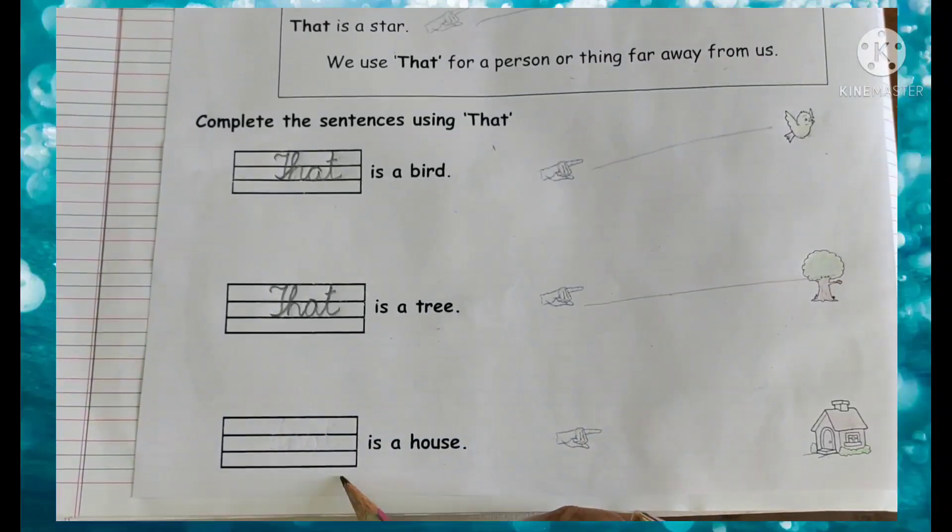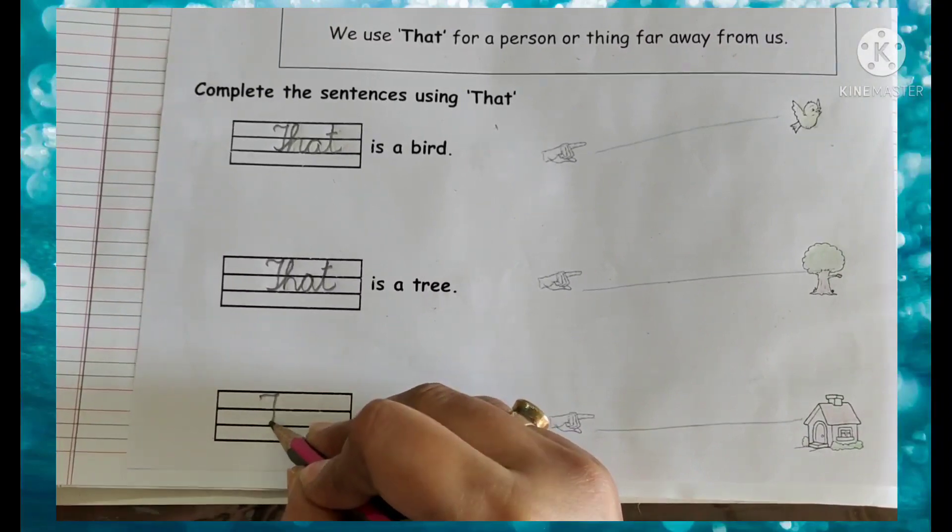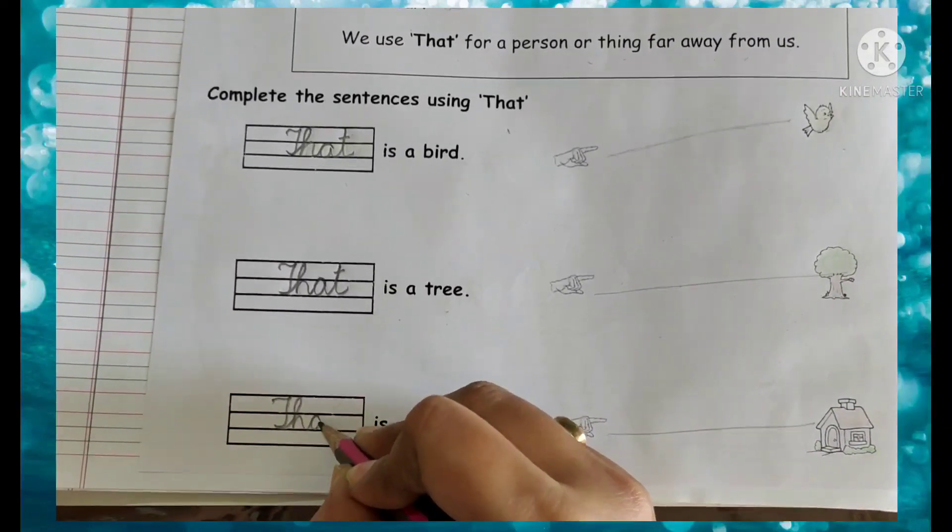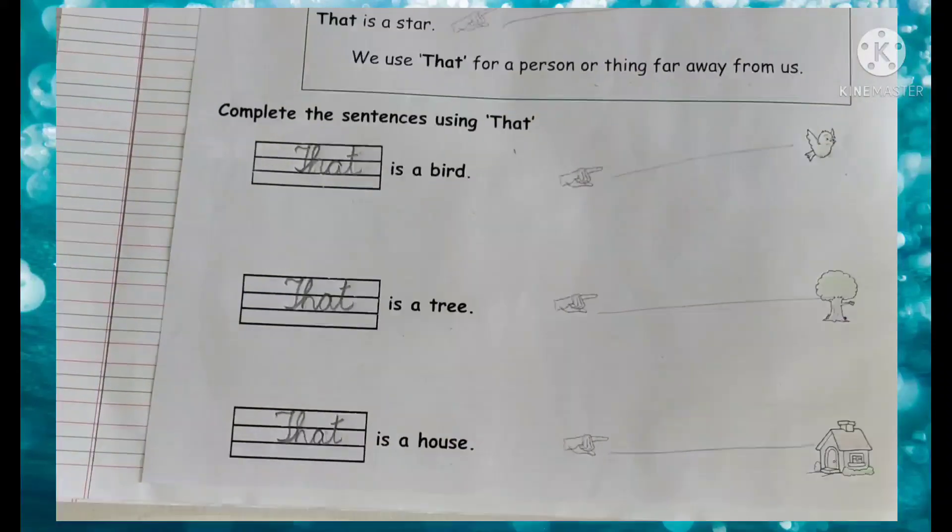The next one, that is a house. So the house also is far. So I will write here, that, is a house. The first letter should be capital letter.